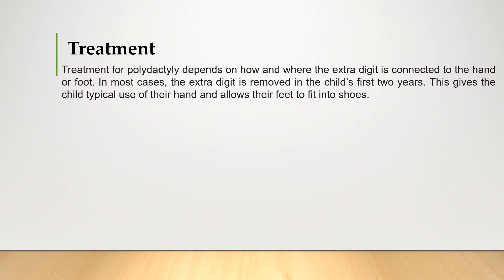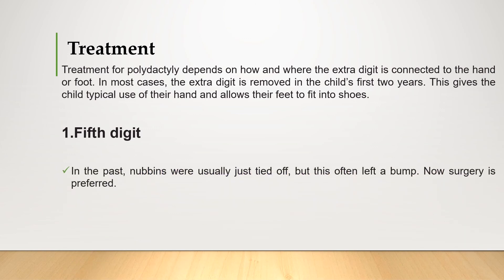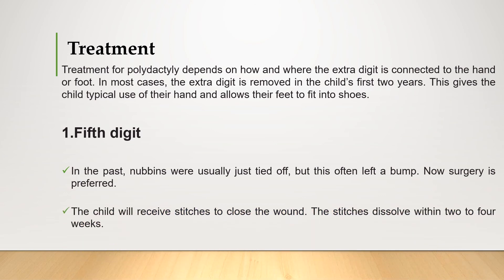Regarding treatment of polydactyly, it depends on how and where the extra digits are connected, whether it is on the hand or foot. Most extra digits are removed during the first two years of life to allow the child to use their hands and to fit into shoes if on the feet. For the fifth digit side, nubbins were previously just tied off, but this often left a bump, so surgery is now preferred. The child will receive stitches to close the wound, which dissolve within two to four weeks.